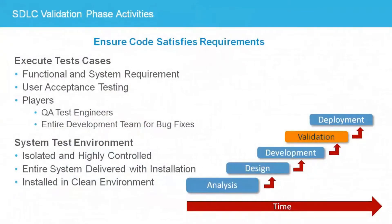The validation phase begins when the engineering software is delivered to the QA test engineers as a complete working application. The delivered application is tested in an isolated environment where all variables which could influence the test can be controlled. Development does not have access to the test environment, so the only way to get code installed on it is to formally deliver it to the QA team. QA testing is performed on the entire application, interacting with it as the end user will once it reaches production.